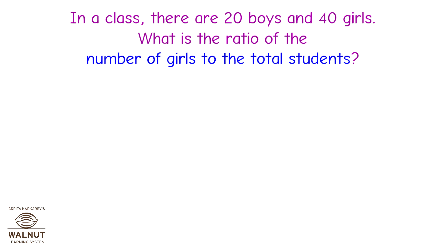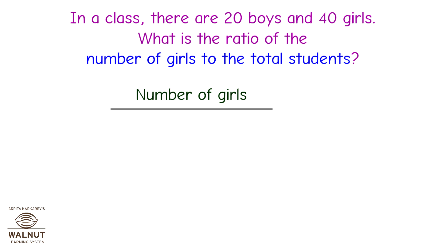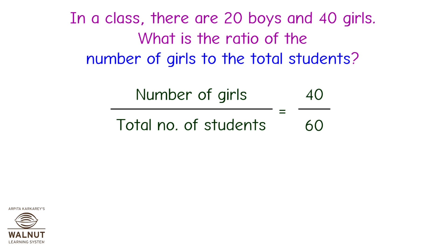In a class, there are 20 boys and 40 girls. What is the ratio of the number of girls to the total students? With the same values, we have to find the ratio of the number of girls to total students. First, we will write the ratio to be found out as a fraction. The fraction is number of girls upon total number of students, that is equal to 40 upon 60.